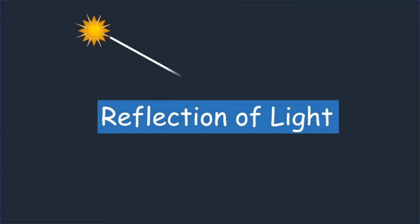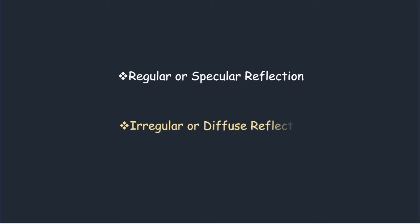In this video, we try to understand the reflection of light. Reflection can happen in two quite different ways. One is regular or specular reflection and another one is irregular or diffuse reflection. Let us learn more about these.